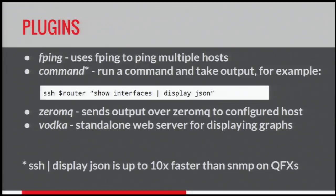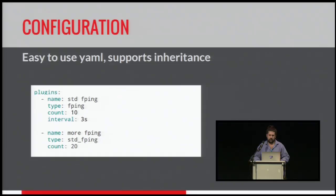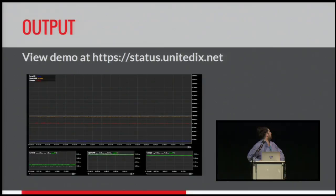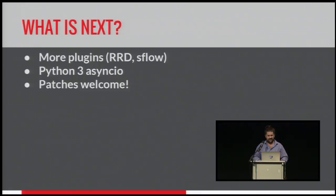It uses 0mq to distribute, because it's going to be run on multiple hosts. We have a standalone web server called Vodka that will serve the graphs if you just want to start this up and play with it. Configuration is all YAML, and everything supports inheritance. Type and name are pretty much interchangeable — type fping is a plug-in that's Python code, and you define another class with standard fping, say every three seconds you want to ping ten times. If you want to do 20, as you can see, it inherits and changes the count while the interval remains the same, so you can do different things without repeating yourself. It produces a pretty graph. More plug-ins are coming, and I want to port it to Python 3 for async.io — patches are welcome.